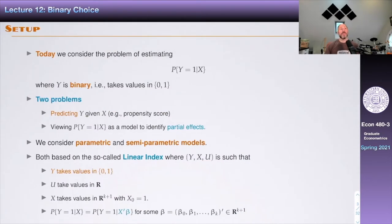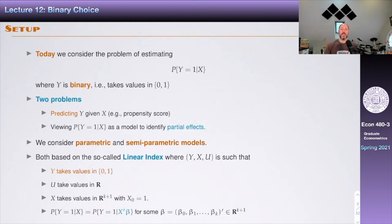The setup is that today we're going to consider the problem of estimating the probability that Y equals one condition on X, where Y is binary — meaning it takes values in zero and one. There are two problems that, despite being mathematically sometimes equivalent, differ in interpretation. Sometimes we care about predicting Y given X: just give me an X and tell me what are the odds that Y is one. That's a prediction problem, very related to the classification trees we discussed last time.